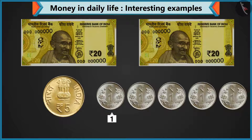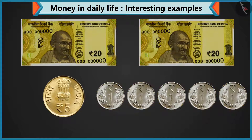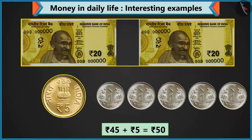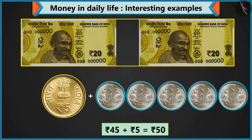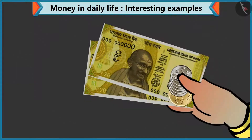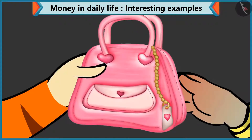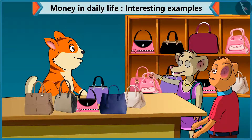Okay, so this is 1, 2, 3, 4 and 5. These are 5 coins of 1 rupee. Chi Chi, look, adding 5 rupees to 45 makes 50 rupees. Wow! Please take this 50 rupees for the purse. Thank you.